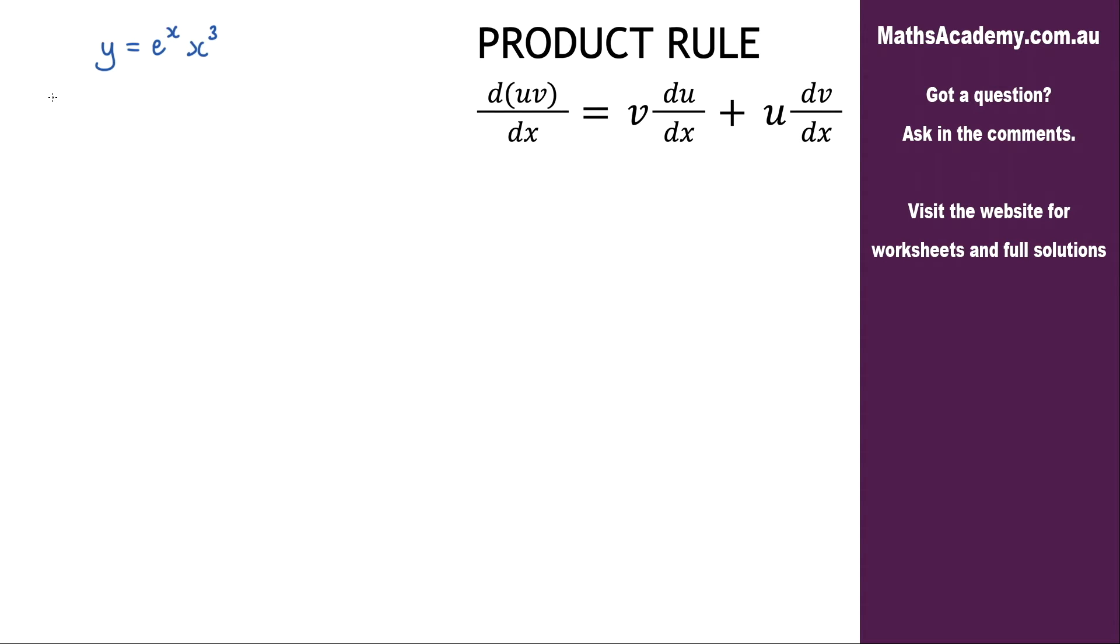Now the first step is the substitution step. So we let u equal e to the x and v is equal to x cubed.